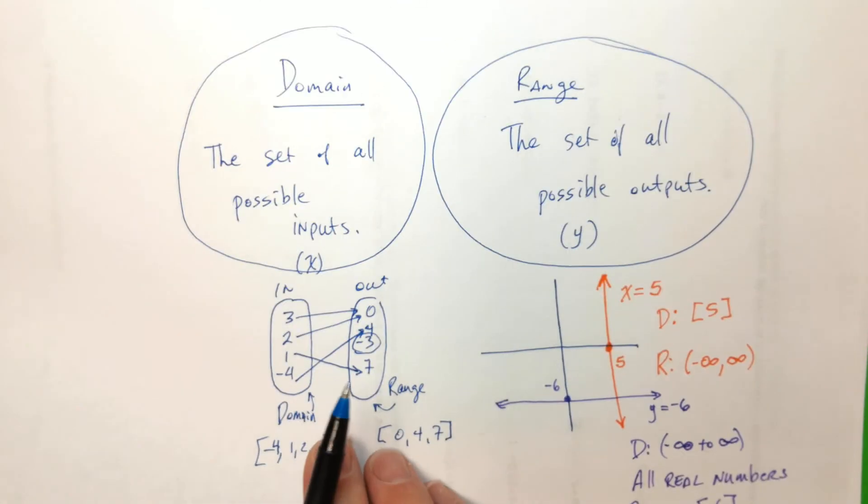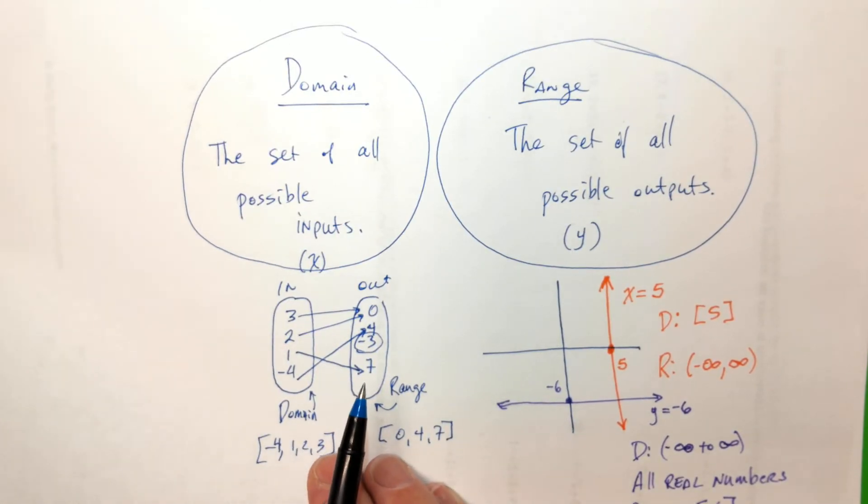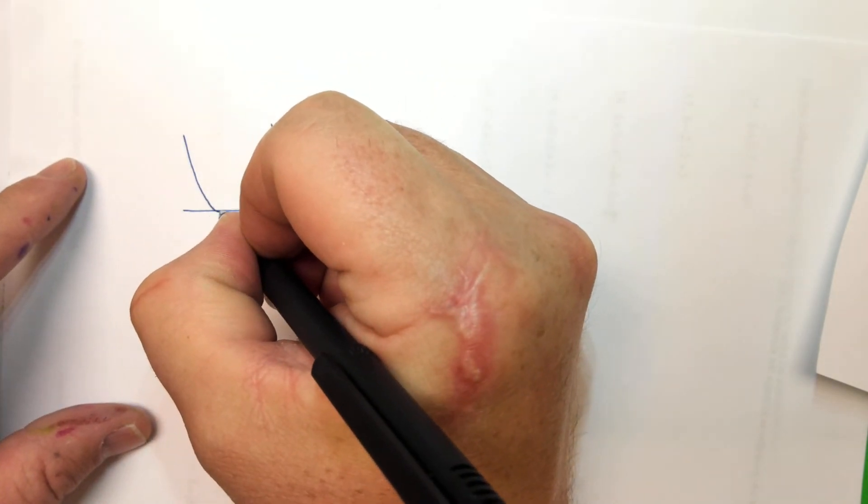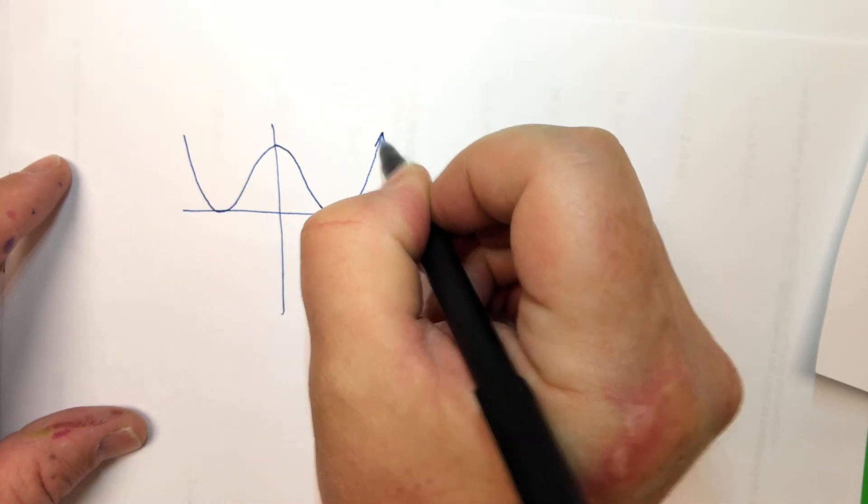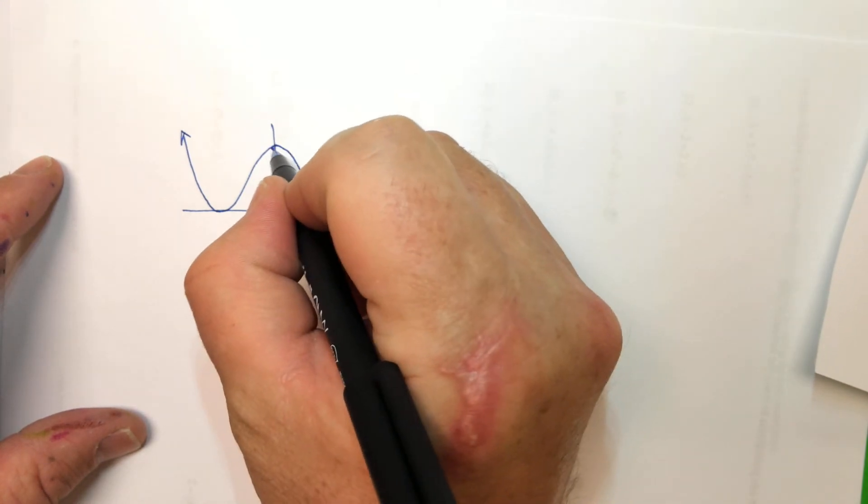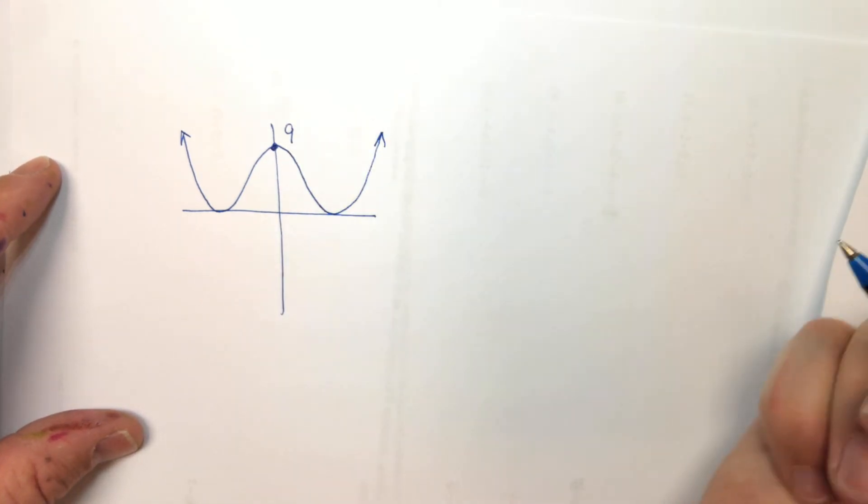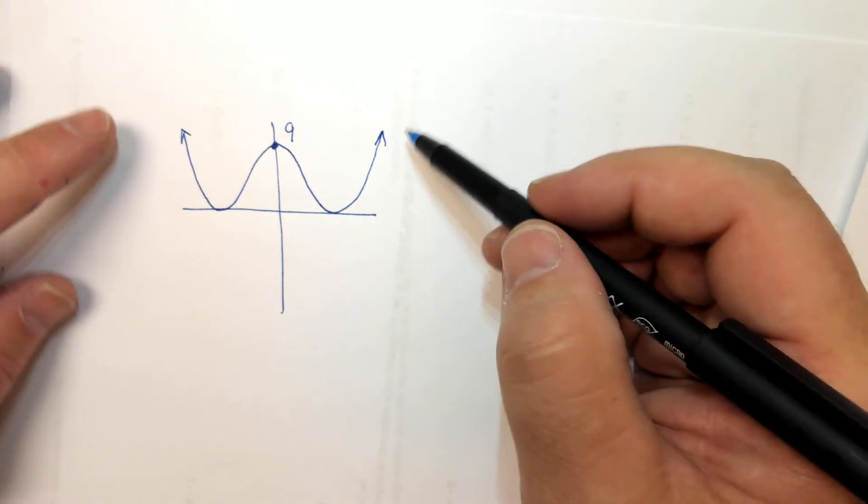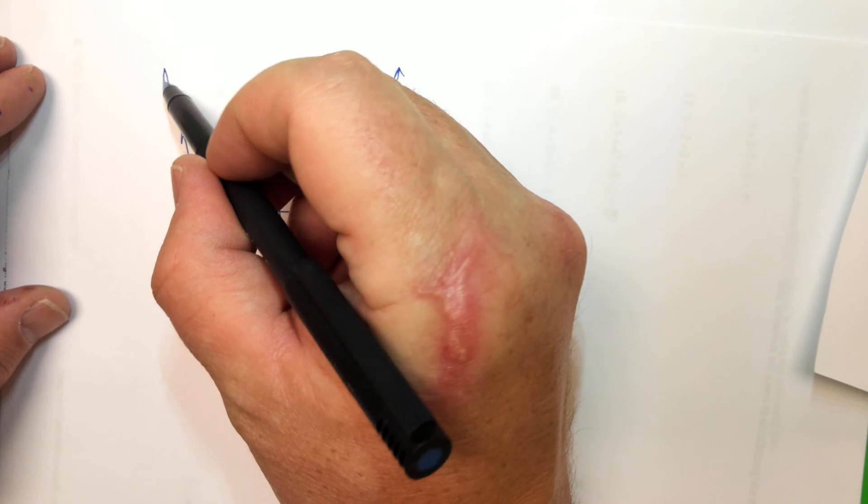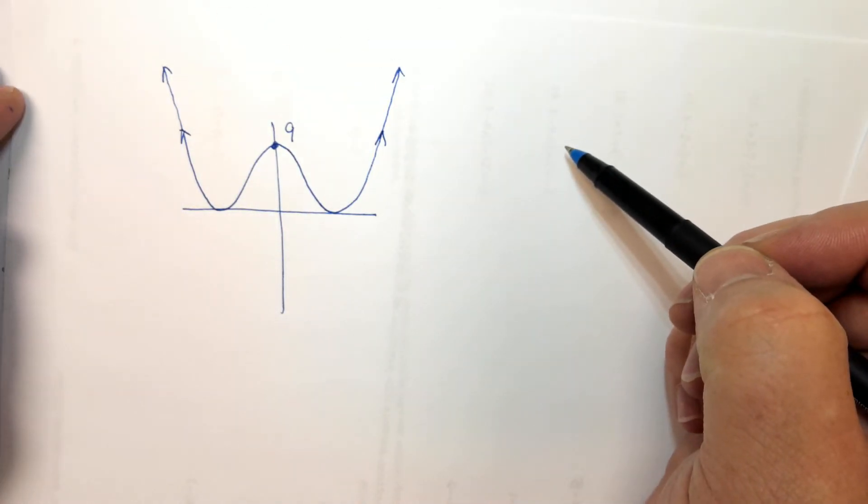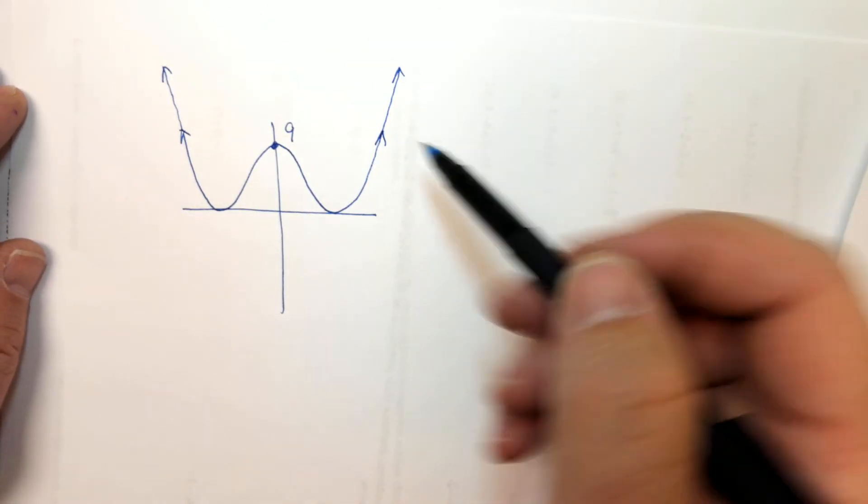Now, it doesn't matter what's shown on the graph, because arrows mean something. Arrows mean that that graph keeps going on forever and ever. Amen. So like if we had a graph like this. Let's say this was 9. These arrows mean that it keeps going up forever and ever. Amen. And you see, as they go up, it gets wider and wider, right?